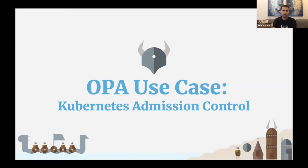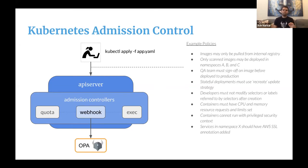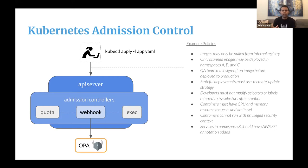Now we'll do a use case deep dive, starting with Kubernetes admission control. One of the hottest use cases for OPA is Kubernetes admission control. Admission control is a piece of code that intercepts requests to the Kubernetes API server before an object gets persisted into etcd. You can use OPA as an admission controller to enhance the security profile of your Kubernetes cluster, enforcing policies like: don't pull images from Docker Hub — only pull from your internal registry; do not use the latest tag in images; or containers should specify memory and CPU limits.